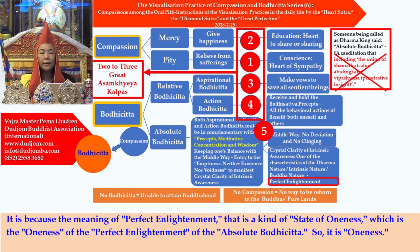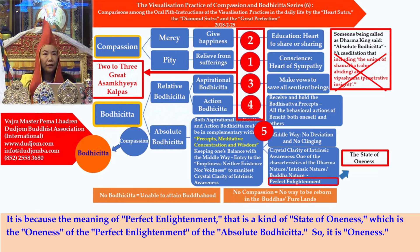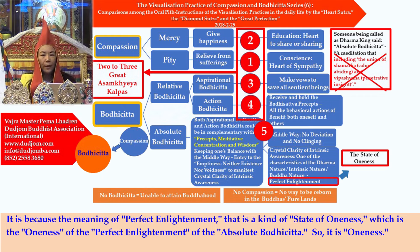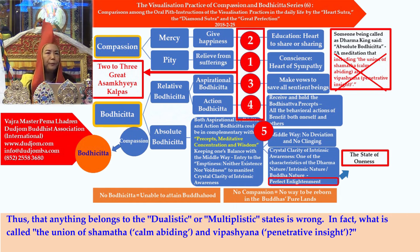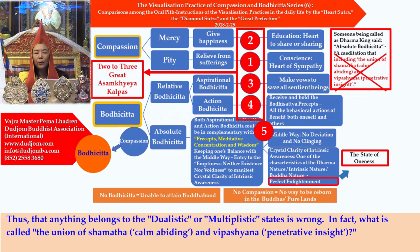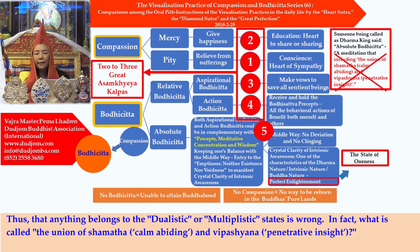Why? The meaning of perfect enlightenment is a kind of state of oneness — the oneness of the perfect enlightenment of the absolute bodhicitta. So it is oneness. Thus, anything belonging to the dualistic or multiplistic states is wrong. What is called the union of shamatha, calm abiding, and vipasshyana, penetrative insight? Let me explain it to you. Shamatha is to stop all the deluded thoughts — those thoughts not related to the subject of your visualization practice. Those cluttered thoughts are also called deluded thoughts.